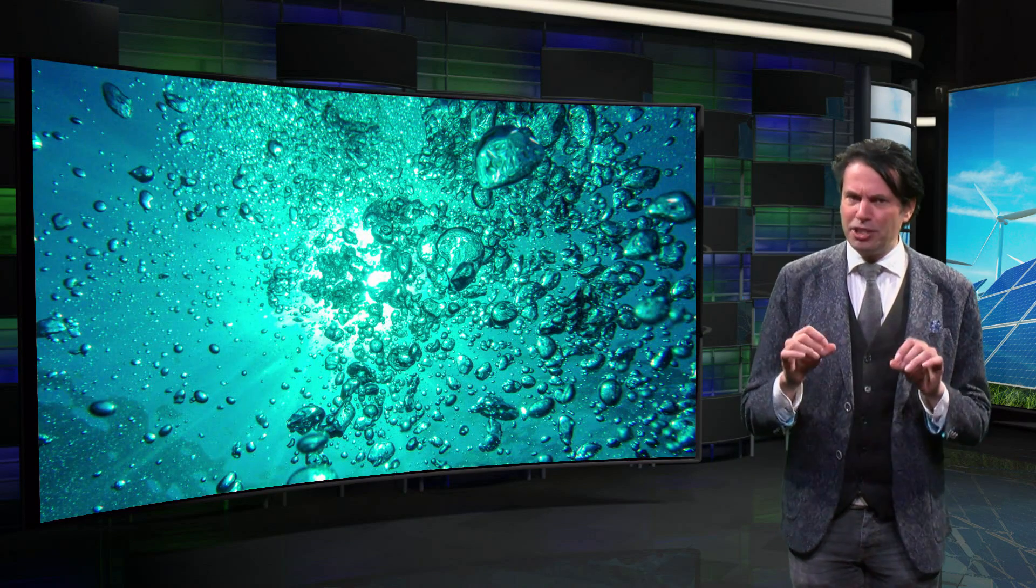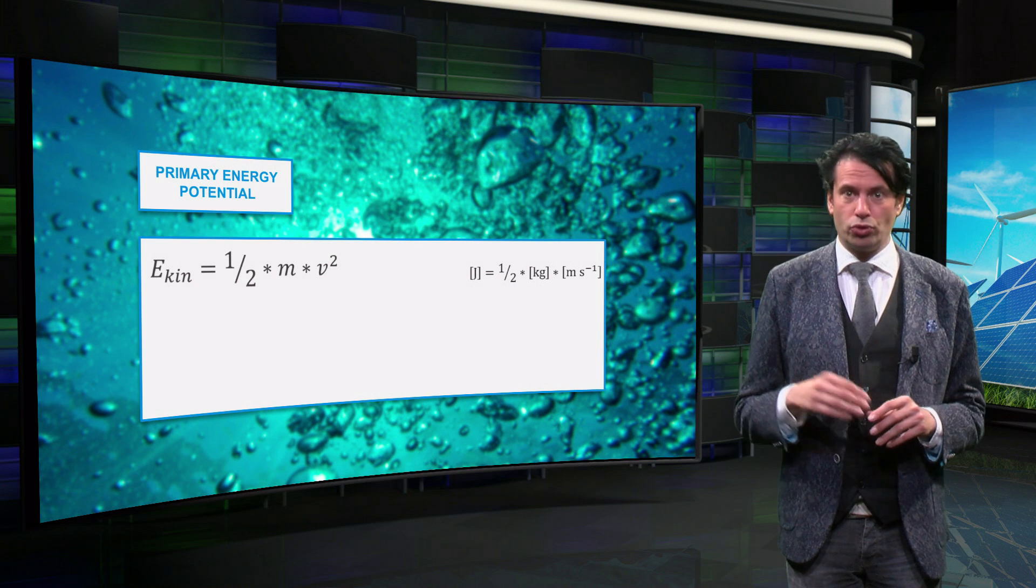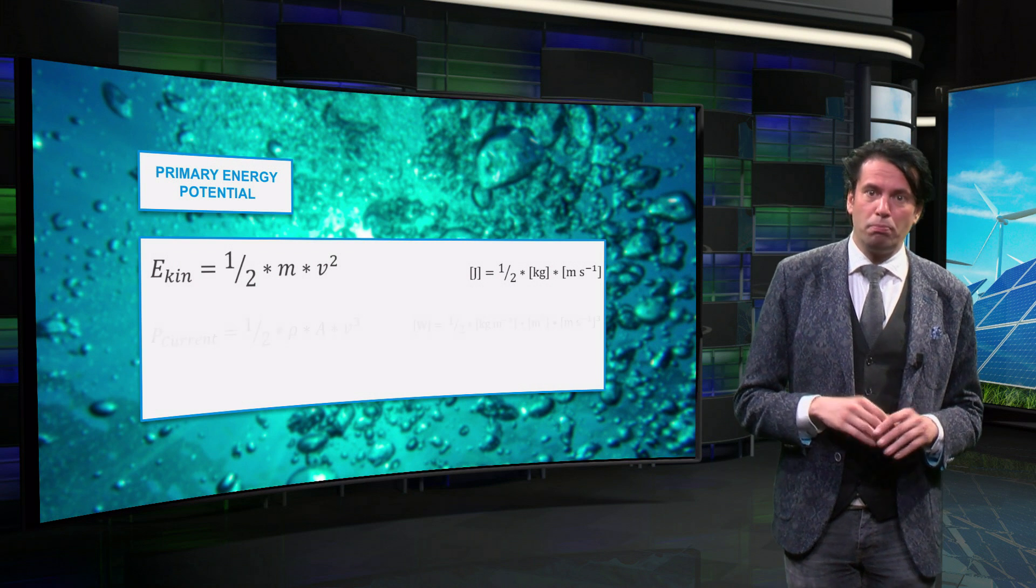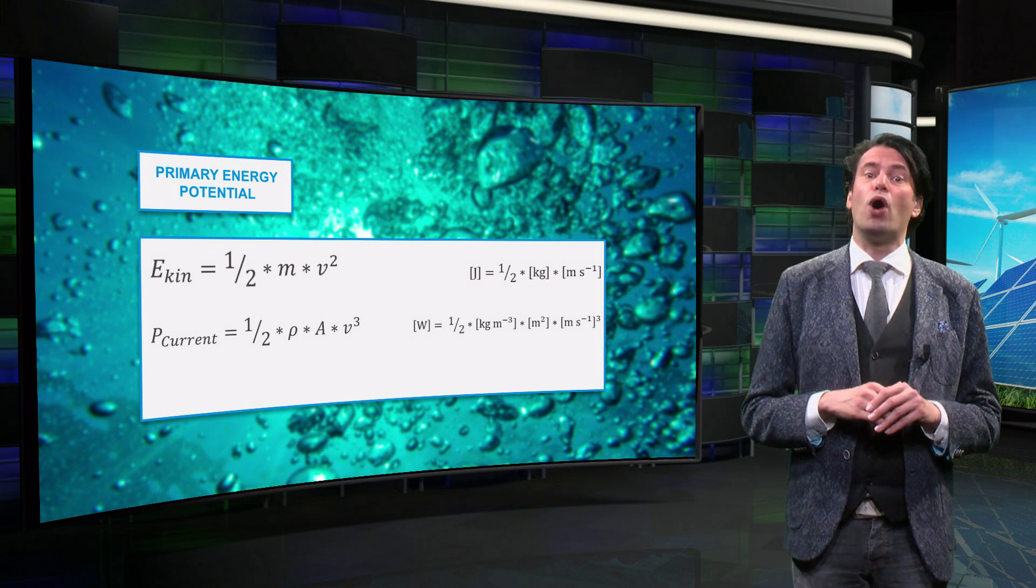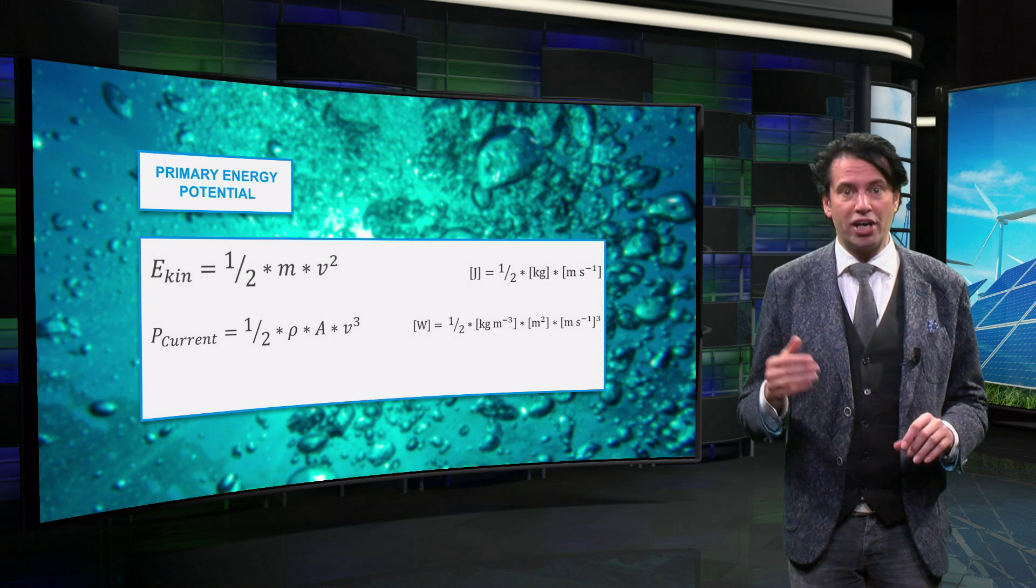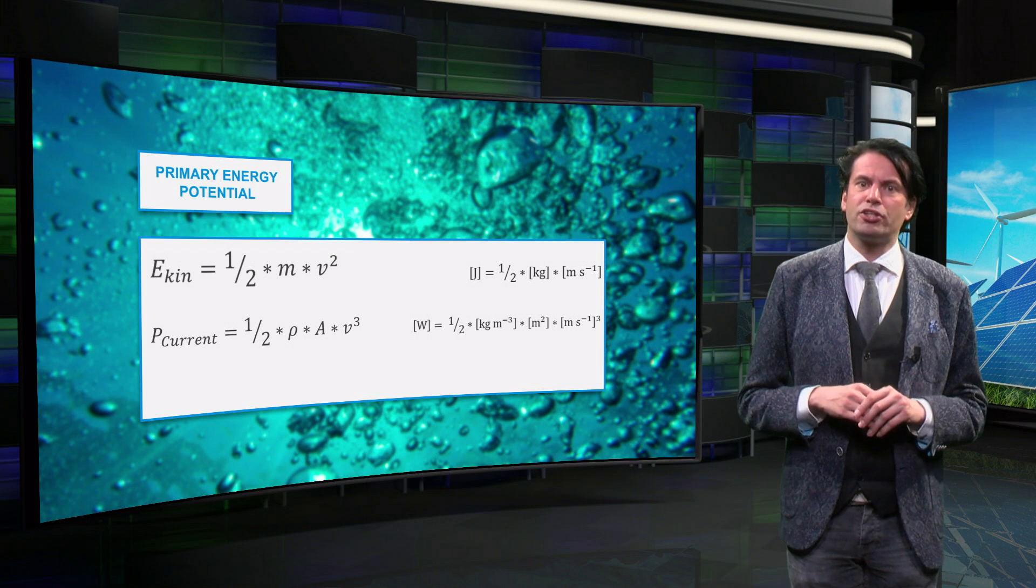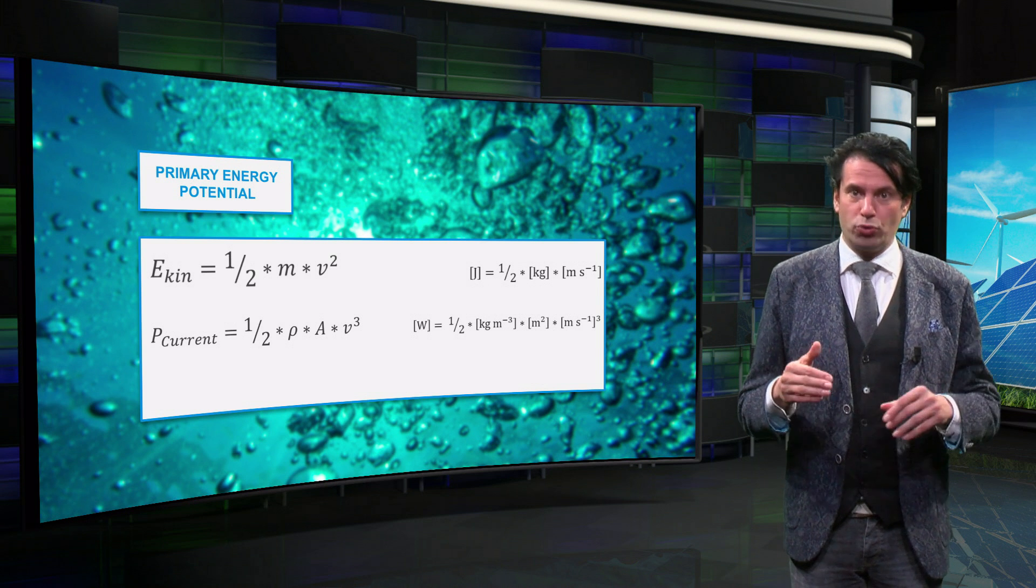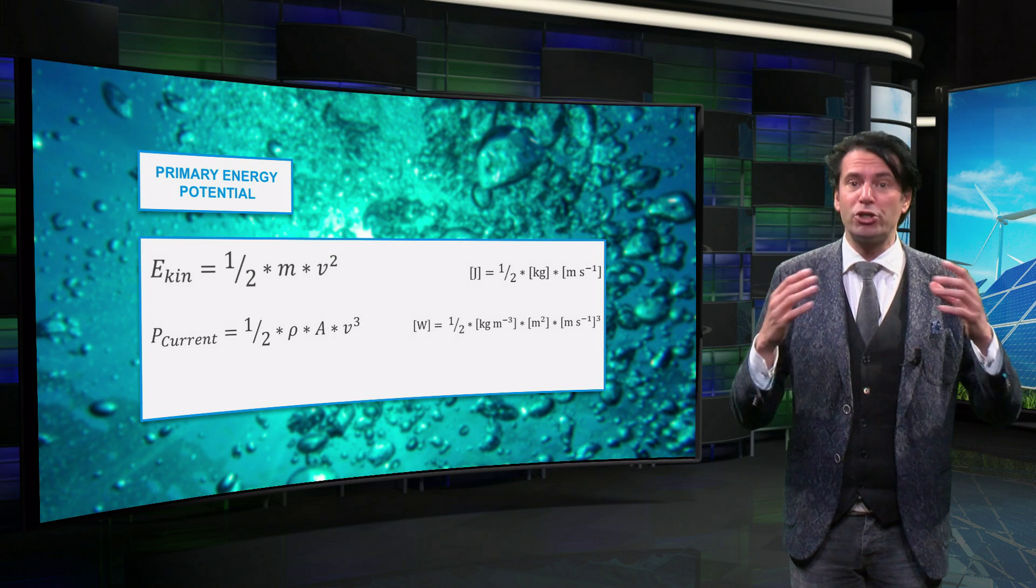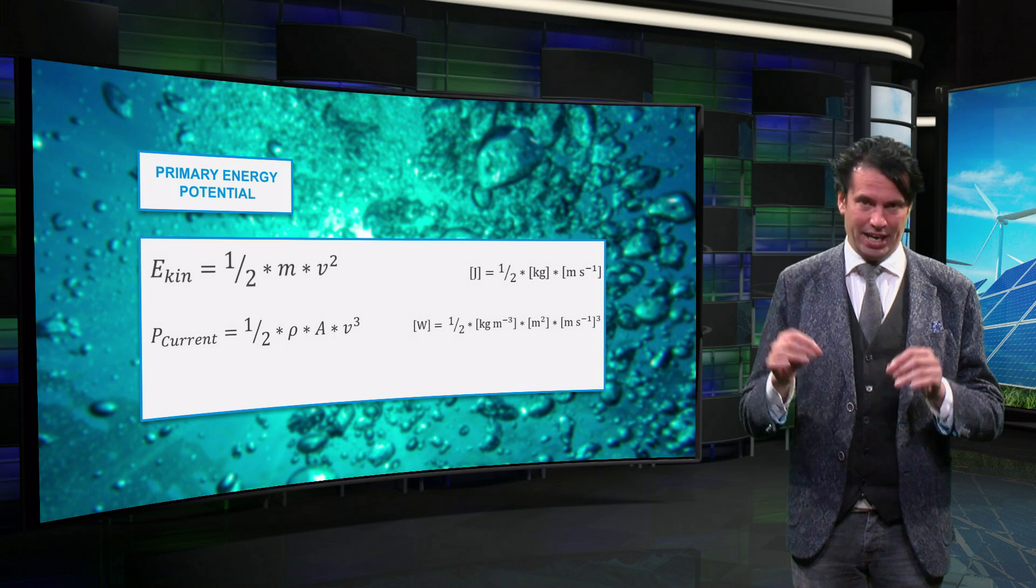The primary energy potential calculation is therefore the same as that of the wind energy potential. Consequently, the power potential, P_current, is equal to half the density multiplied by the surface area of the rotor and the velocity to the power of 3. The power potential in a water flow with respect to a similar wind flow is much larger since water has a much higher density than air.